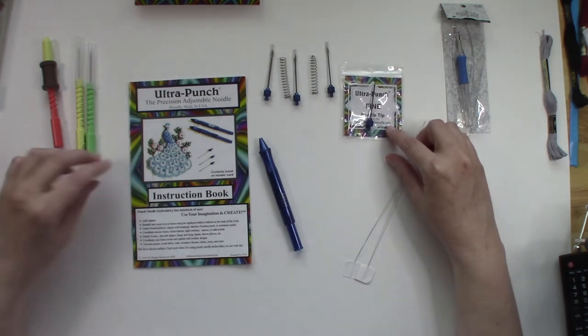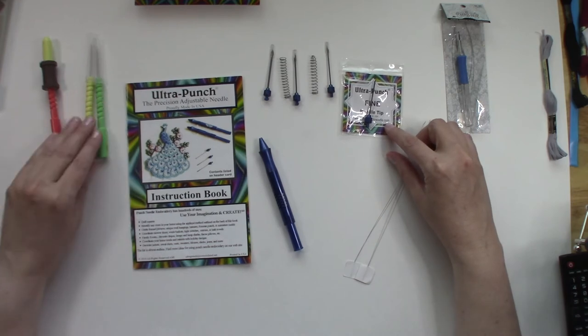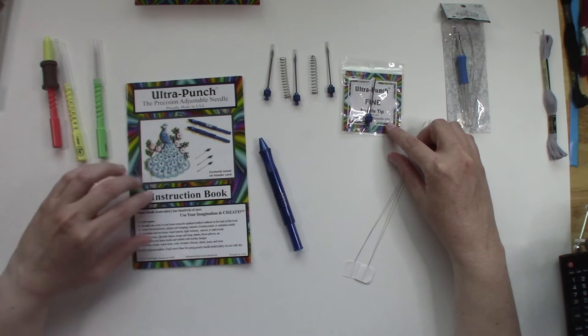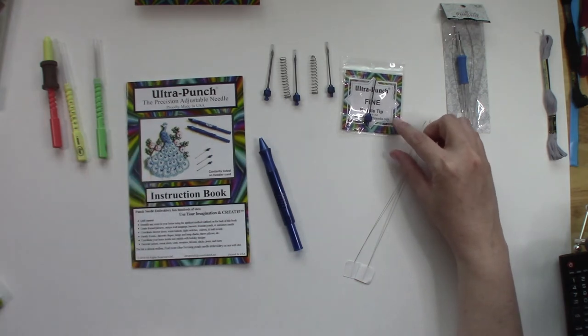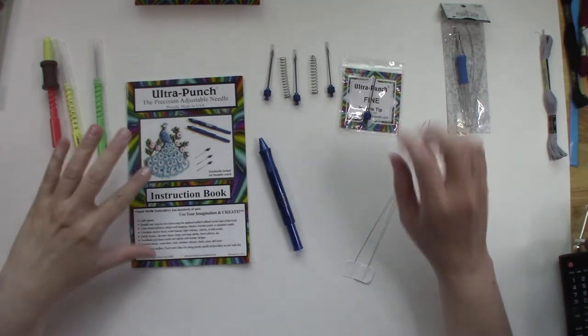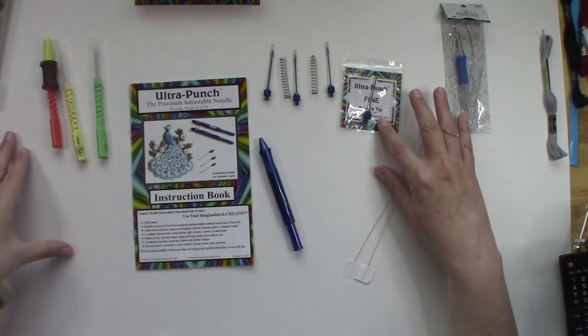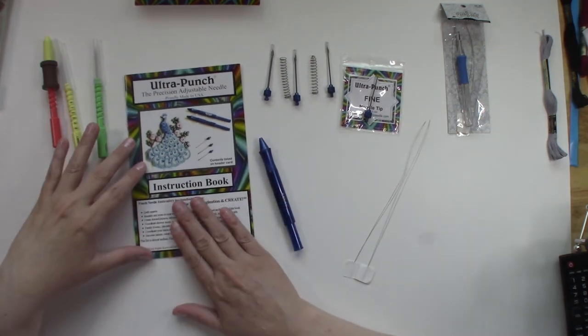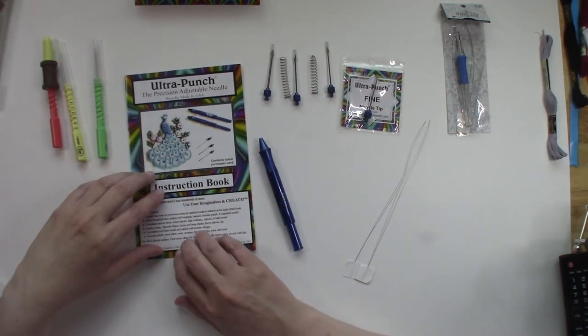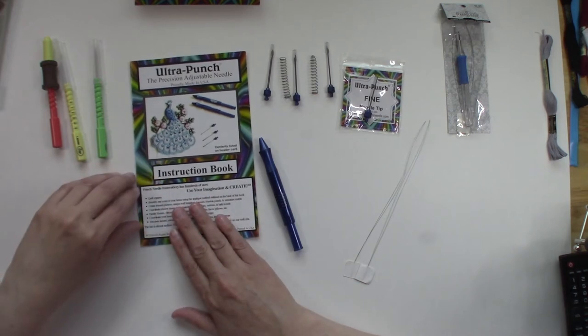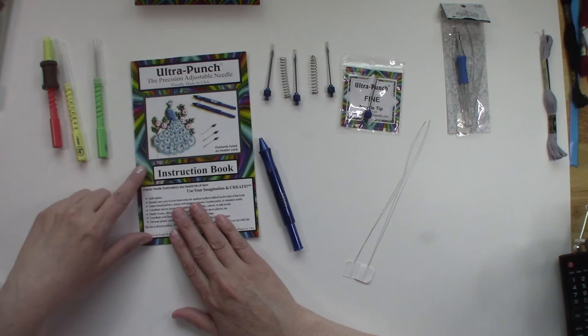There is also a site called The Woolery, that is W-O-O-L-E-R-Y. Their set was right around $26 and your extra needle was around $6. Like I said, I bought my set on Etsy and there are other people on Etsy that carry it.